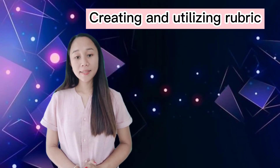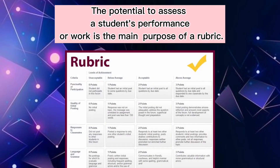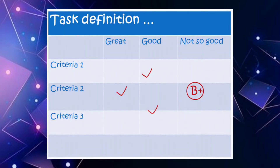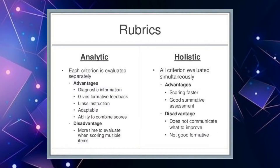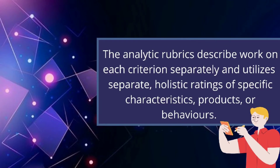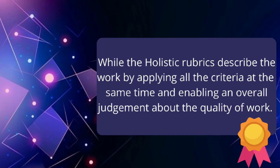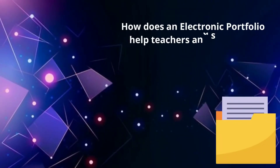Creating and utilizing rubrics: the main purpose of a rubric is to assess a student's performance or work. To effectively assess learning objectives, rubrics can be modified for each assignment or outcome. Analytic and holistic rubrics are used to assess teachers in observing students during various performances or classes. Analytic rubrics describe work on each criterion separately, providing distinct holistic ratings of specific characteristics, products, or behaviors. Holistic rubrics describe work by applying all criteria at the same time, enabling an overall judgment about the quality of work.